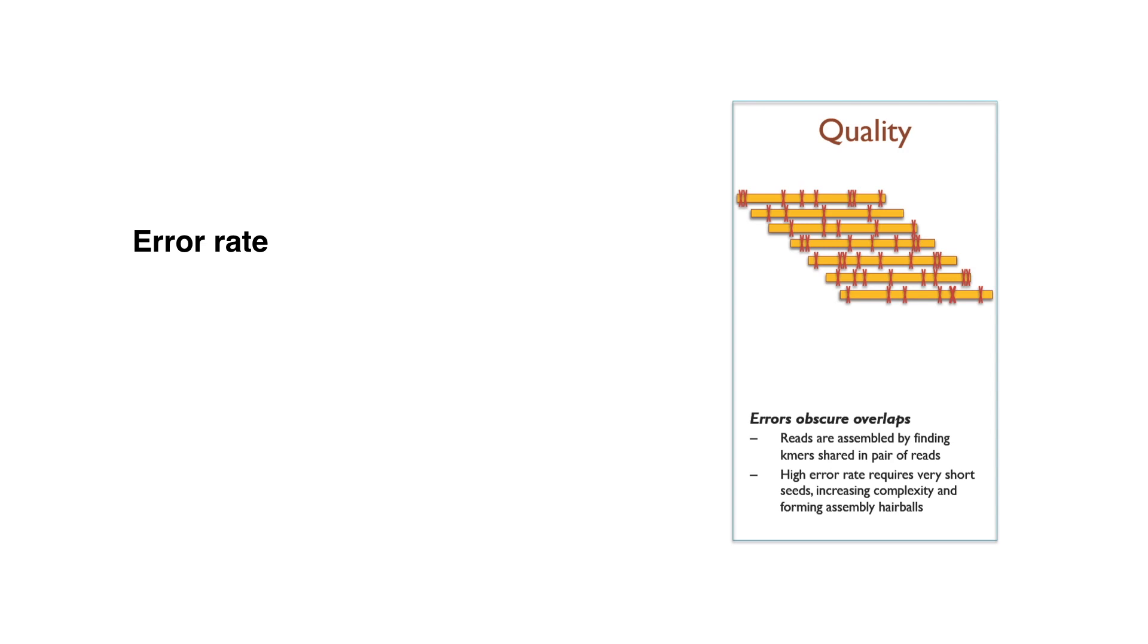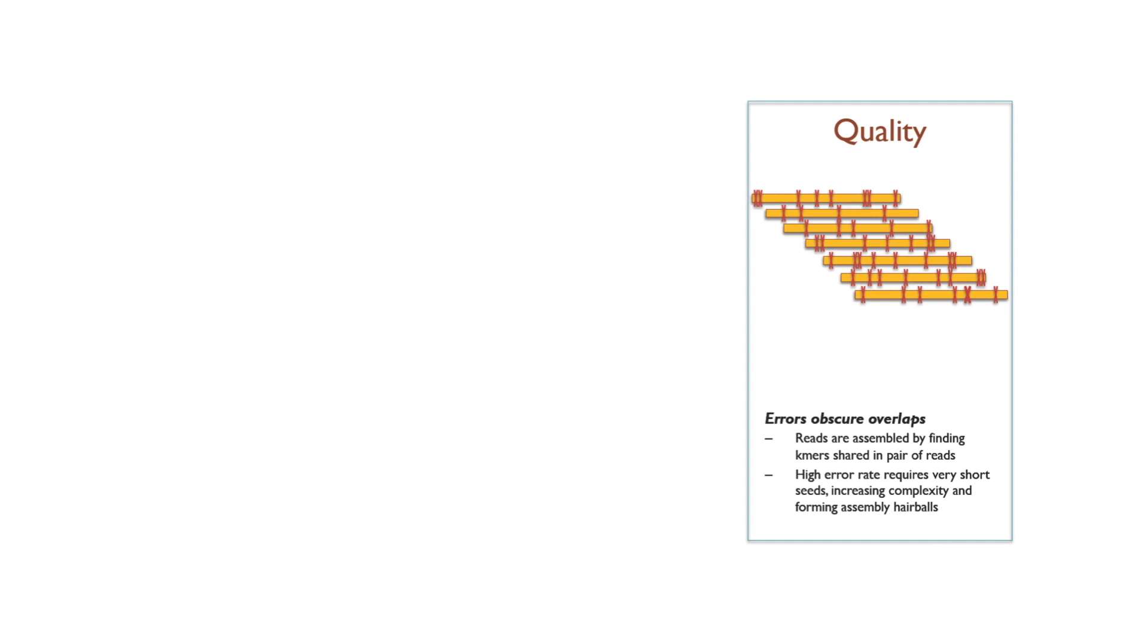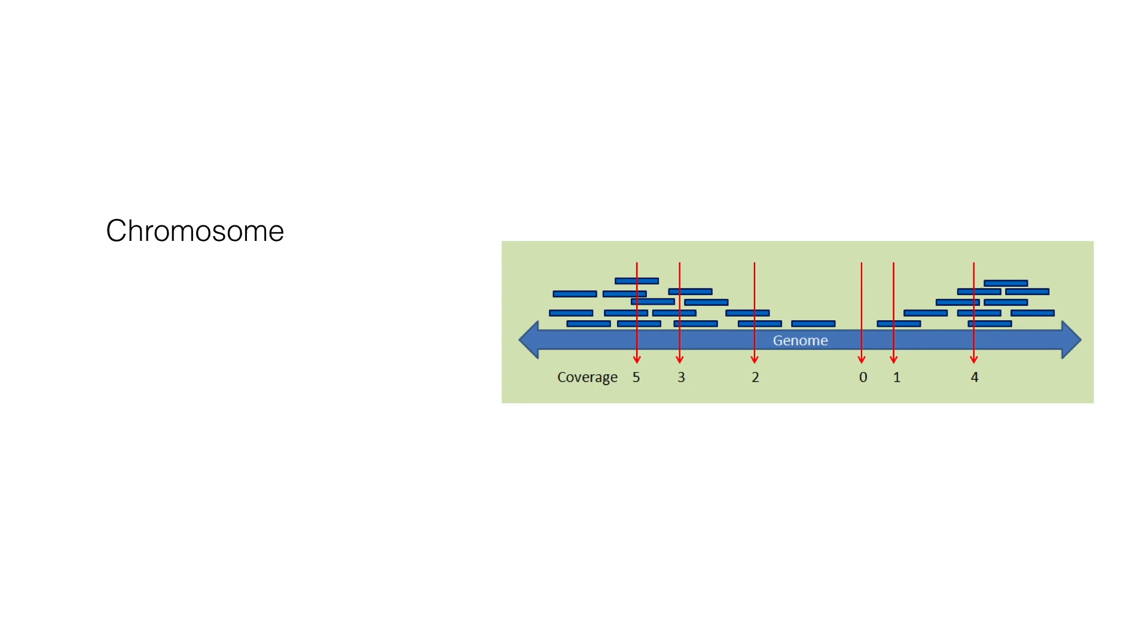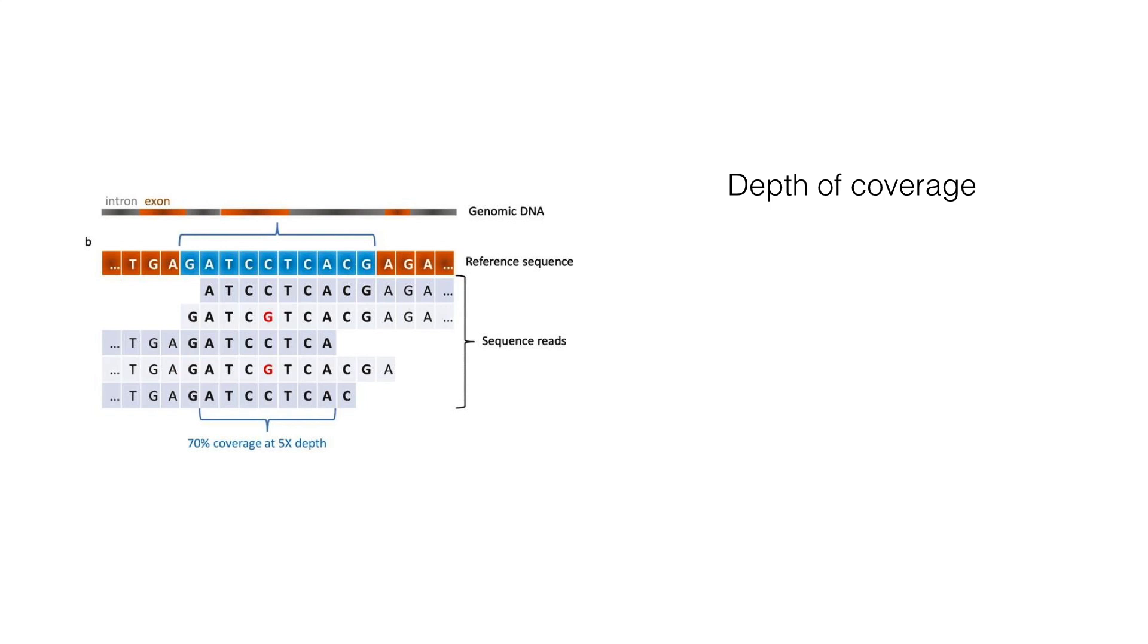Third, error rate in the sequencing should be kept low. High error rates result in shorter K-mers increasing complexity in the assembly and resulting in poor outcomes. In other words, any good assembly requires good data at high coverage. In the figure, we can see that different parts of the chromosome will have different numbers of reads aligned to it. Depth of coverage is calculated simply by estimating the average number of reads at each nucleotide across genome. Higher depth of coverage is achieved by generating more sequences from the same sample of DNA.